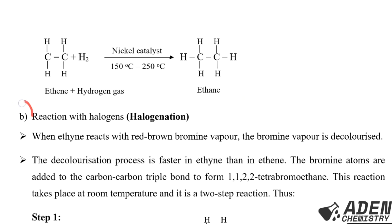The second addition reaction, part (b), is reaction with halogens, called halogenation. When ethyne gas reacts with red-brown bromine vapor, the bromine vapor is decolorized. The decolorization process is faster in ethyne than in ethene because of the triple bond. The bromine atoms are added to the carbon-carbon triple bond to form 1,1,2,2-tetrabromoethane, in a two-step reaction at room temperature.